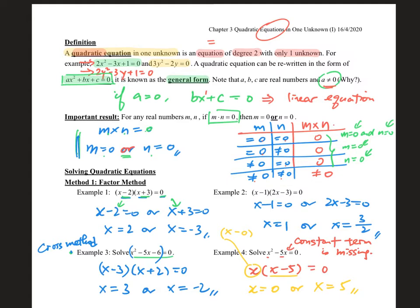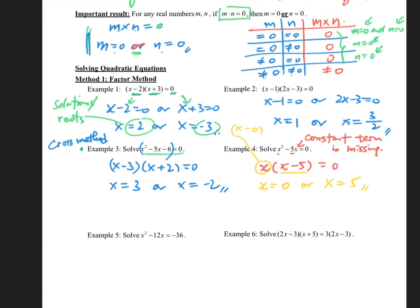So the first answer will be x equals 0, or from the second bracket, x equals 5. So that's the general picture of how we can solve a quadratic equation. Also note that I mentioned the word 'root' — the solution of the equation is also called the roots of the equation. Both words will be used in our study.